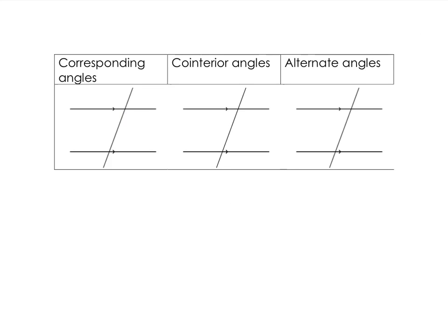Let's open your key concepts book and make sure we've got the right idea of what corresponding, co-interior, and alternate angles are. Put in for me all the corresponding angles that are equal to each other, all the co-interior angles that add up to 180, and then the alternate angles. For corresponding, remember you're looking for the F — it can be a forwards F, a backwards F, an upside down F, or an upside down and backwards F. Your co-interior angles are tucked into your U, and your alternate angles are in a forwards or backwards Z. Pause the video and do that now.